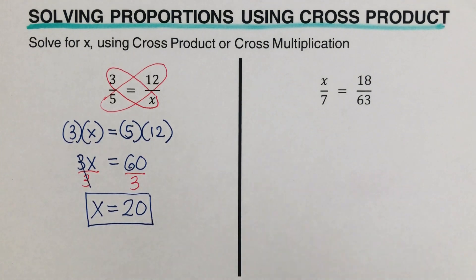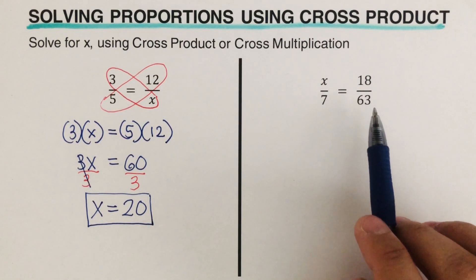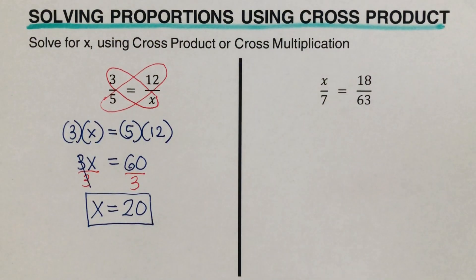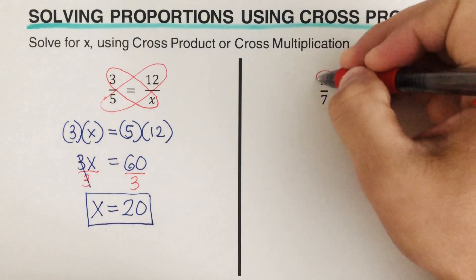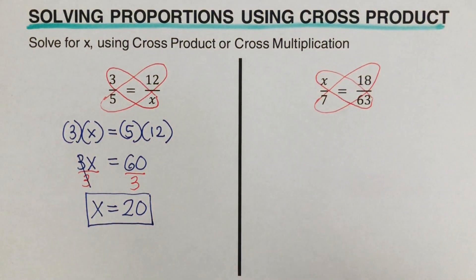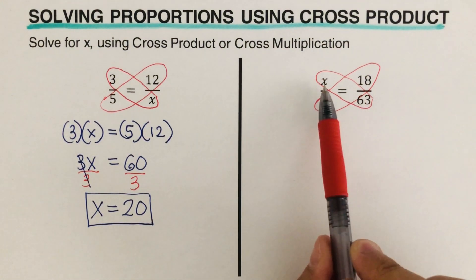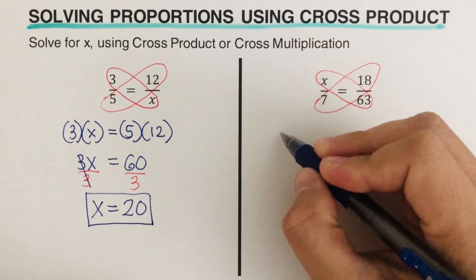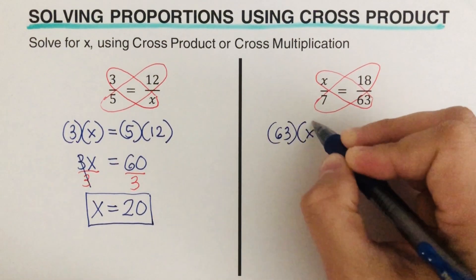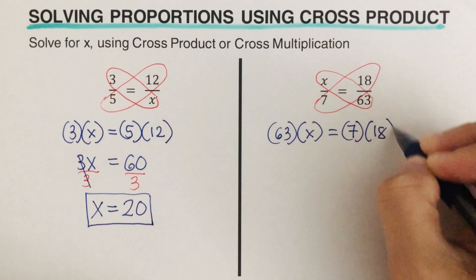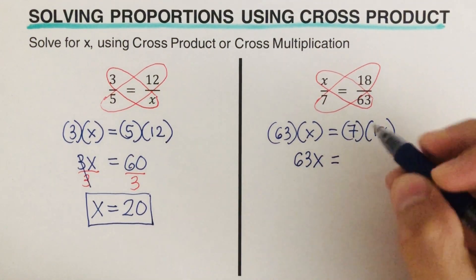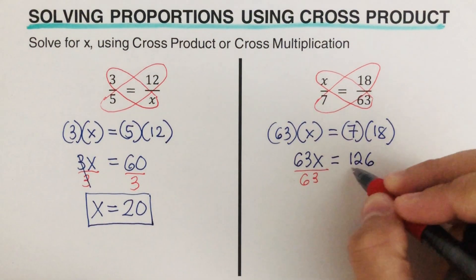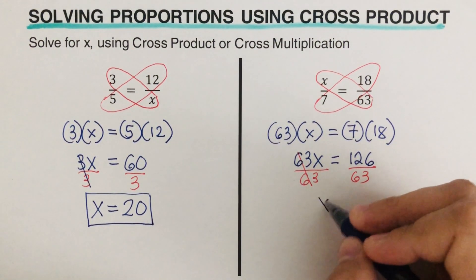For this next problem, do not multiply the seven and the three — that's not how we do it. Do not multiply the x and the 18 — that is not the correct way. Instead, we multiply 63 and x together, and we have 7 and 18 multiplied together. So we get 63x is equal to 7 times 18, which is 126. We divide both sides by 63 and we're left with x is equal to 2.